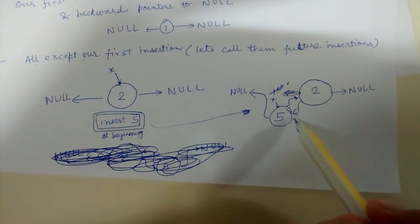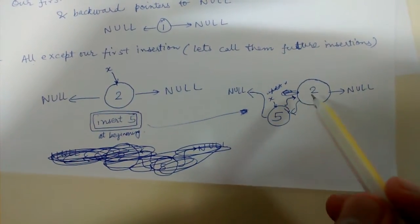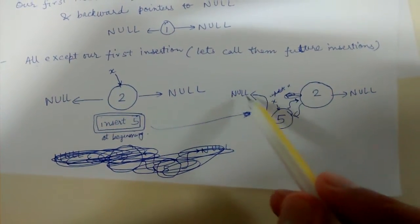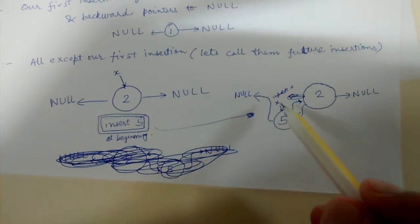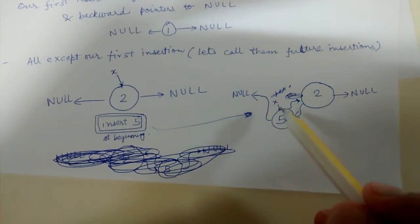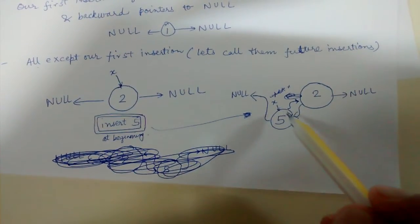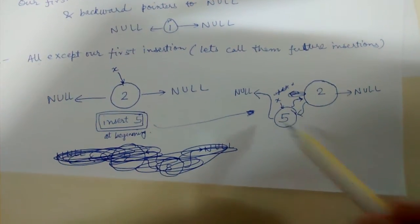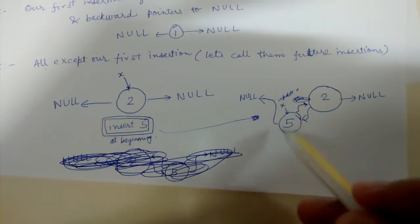So what do I do? Two's backward pointer is now pointing to five, five's forward pointer is pointing to two, and five's backward pointer is pointing to null. And finally I update X, that is the linked list, to begin from five. So this is the updated beginning of the linked list.